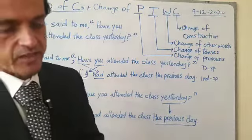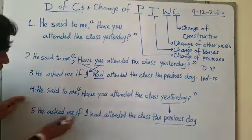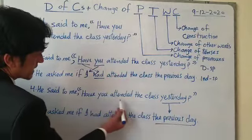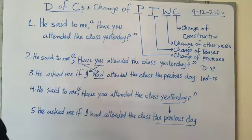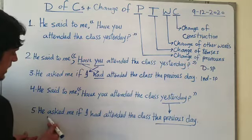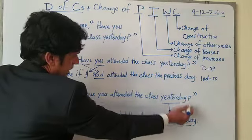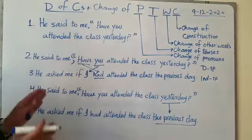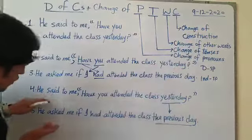When we change direct speech into indirect speech, an interrogative sentence is changed to a statement. Compare the two: in 'Have you attended the class yesterday?' the auxiliary 'have' is before the subject, but in indirect speech the auxiliary comes after the subject — 'He asked me if I had attended...' — so the auxiliary 'had' is after the subject 'I.' Also, the question mark is deleted and replaced with a full stop. So the interrogative sentence becomes a statement. That is change of construction.